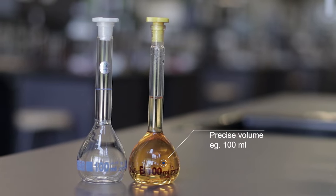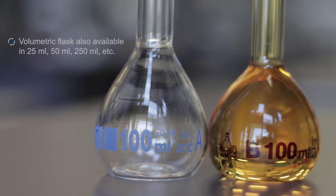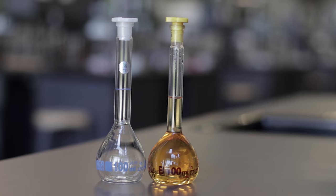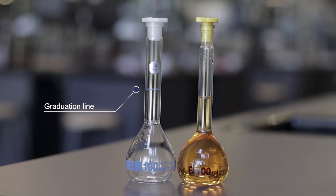Volumetric flasks contain a precise volume at a particular temperature and can be found in different volumes and sizes. Solutions are made up until the graduation line which indicates the desired volume.